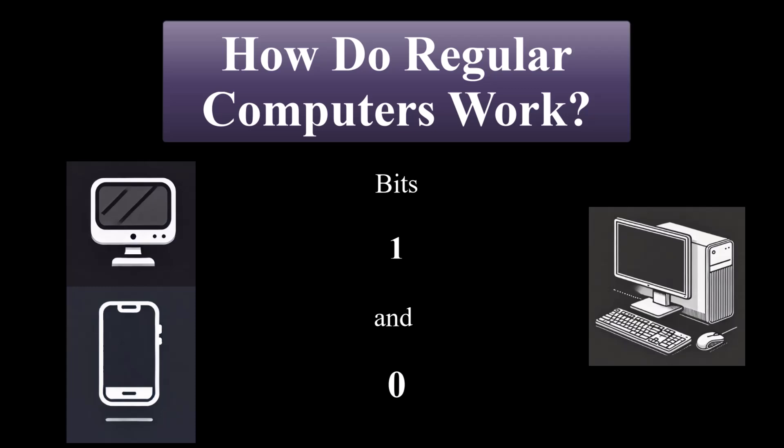Your personal computer, laptop, or phone runs on bits, which are tiny pieces of data that can either be zero or one. Every app, game, website you use is built by combining thousands or millions of these bits to process information.